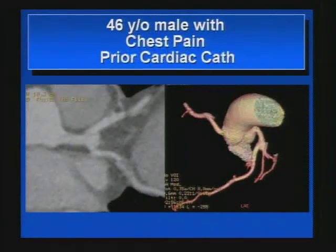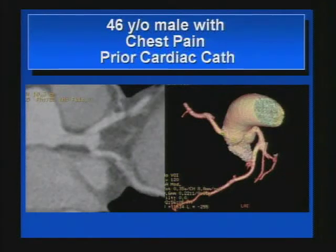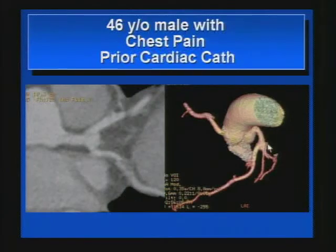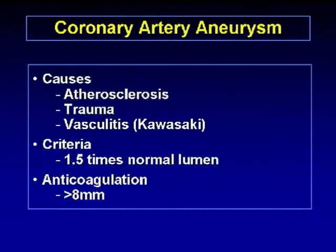Let's start with our first case. This patient is a 46-year-old who had a cardiac cath and was referred for a coronary CTA for evaluation of these abnormalities. This is a curved maximum intensity projection. We can see the left main coronary artery, LAD and circumflex, and a focal area of dilatation right at a bifurcation. In the volume render image, we again see that focal dilatation, consistent with a coronary artery aneurysm.